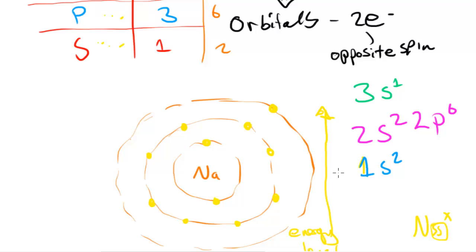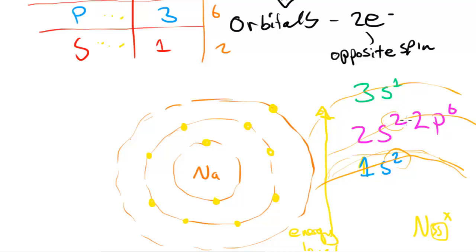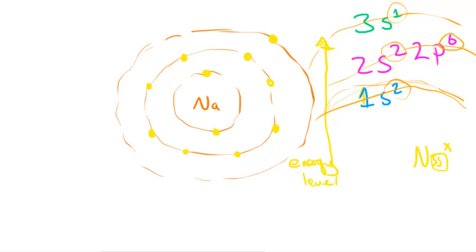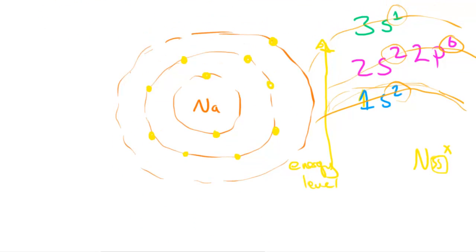Then we have the last one at energy level 3, which is 3s¹, since sodium only has one electron in the outer shell. So the first shell contains 2 electrons, the second shell contains 8 electrons (2 plus 6), and the third shell contains 1 electron — as you can see in the diagram. The filling rules for orbitals in these subshells I'll go into in the video after the next one.